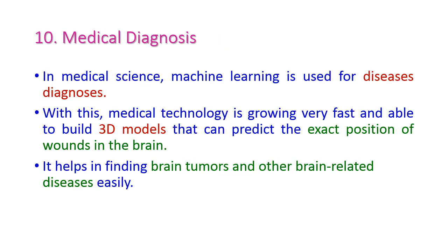The next application is medical diagnosis. Machine learning is widely used to diagnose diseases. It can build 3D models so we can predict the exact position of wounds or scratches in the brain or other sensitive organs. It is also helpful to find brain tumors, other brain-related diseases, heart-related diseases, cancers, and more.